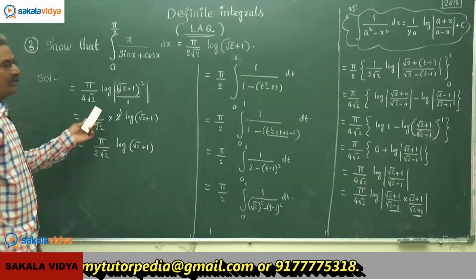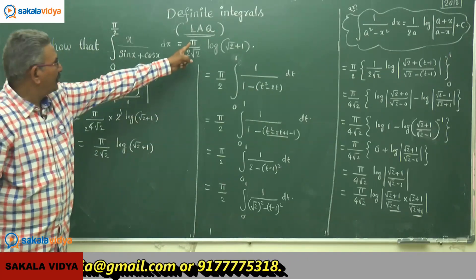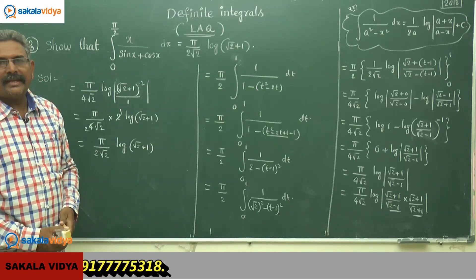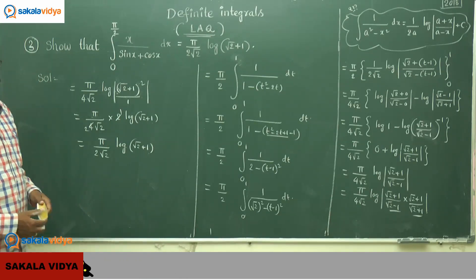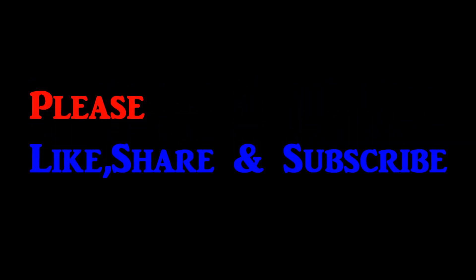Hence the integral from 0 to π/2 of x/(sin x + cos x) dx equals π/(2√2) · log(√2 + 1), which is the required result.